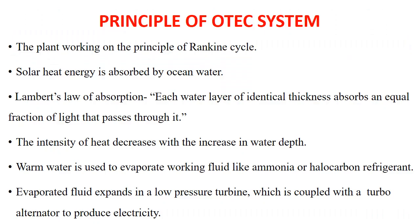The principle of the OTEC system: the plant works on the principle of the Rankine cycle. Solar heat energy is absorbed by ocean water following Lambert's law of absorption, which means that each water layer of identical thickness absorbs an equal fraction of light that passes through it. The intensity of heat decreases with the increase in water depth. Warm water is used to evaporate a working fluid like ammonia or halocarbon refrigerant. The evaporated fluid expands in a low pressure turbine which is coupled with a turbo alternator to produce electricity.